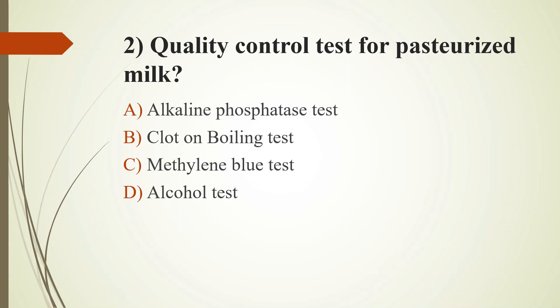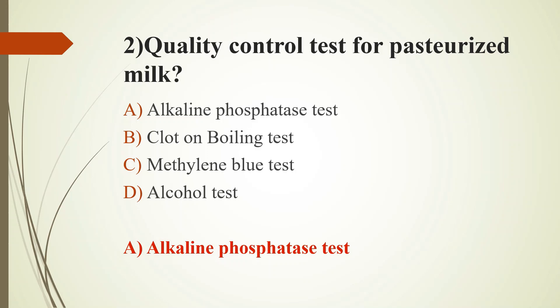Second question: Quality control test for pasteurized milk — Option A: Alkaline Phosphatase test; Option B: Clot on Boiling test; Option C: Methylene Blue test; Option D: Alcohol test. The answer is Option A: Alkaline Phosphatase test.